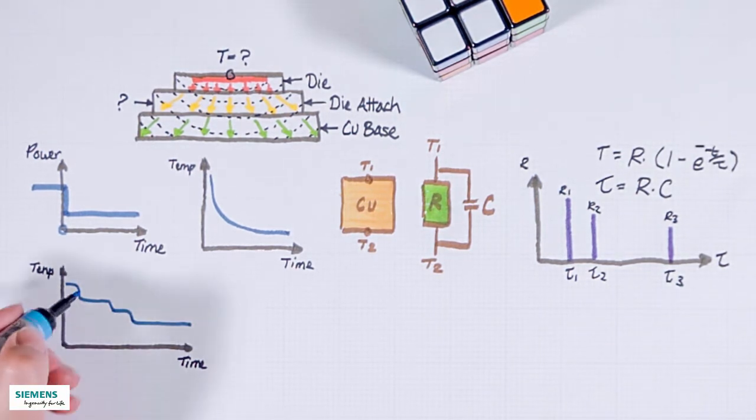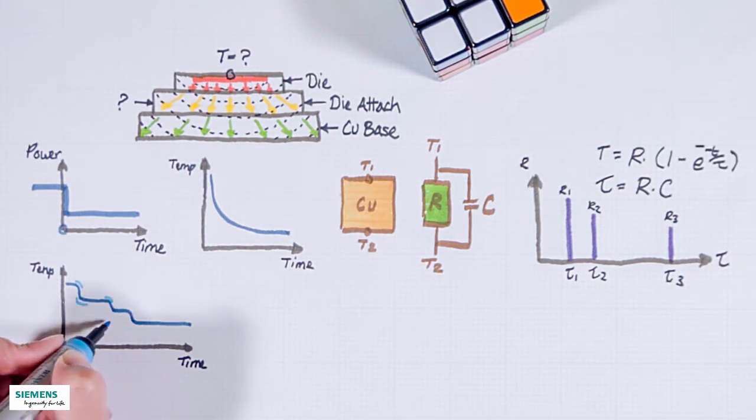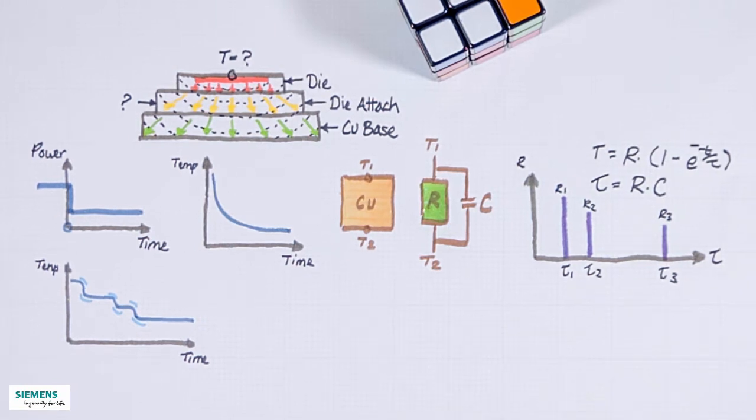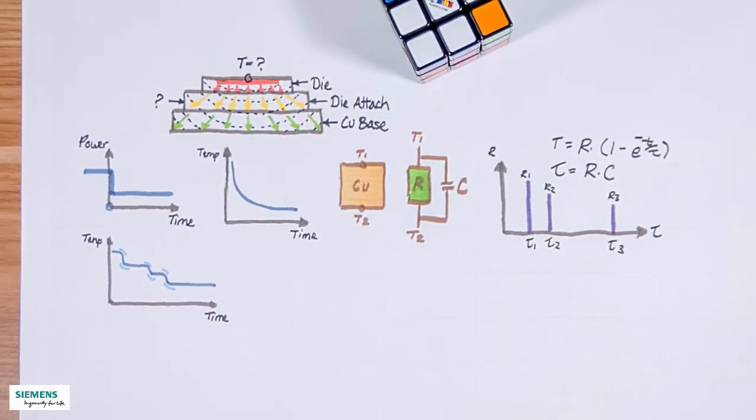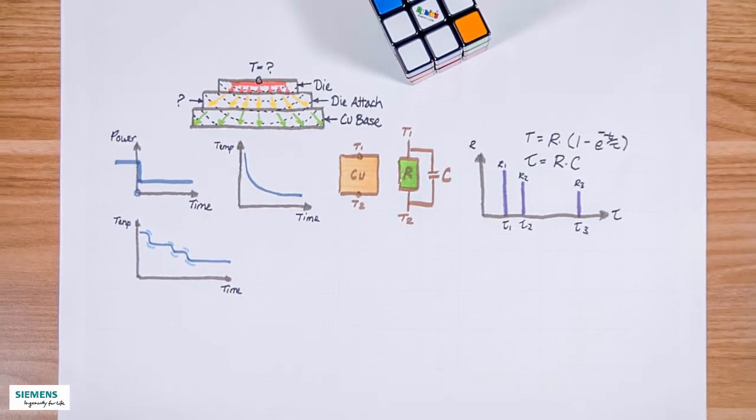On this curve we have an exponential function here, some smaller ones here and another here. This curve is a sum of many of these exponential curves, where the R's and C's are different values. So what we have to do is to try and figure out the R's and C's in the models.